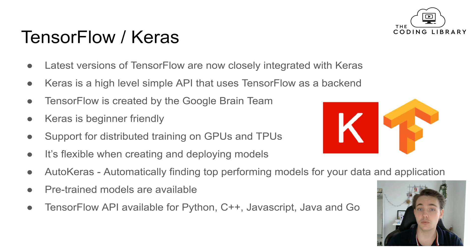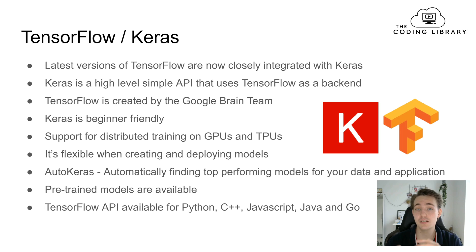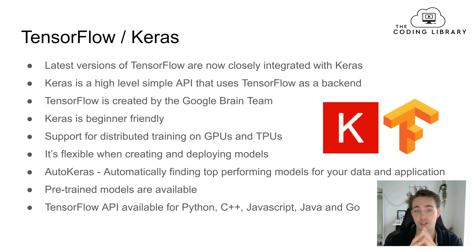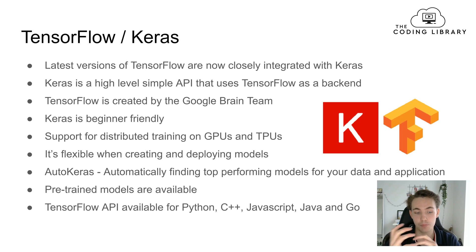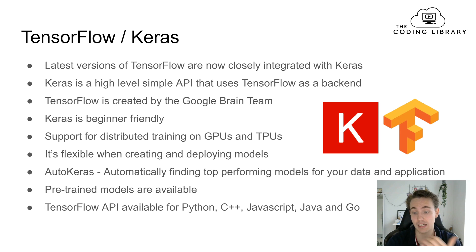With AutoKeras, you give it your data and it finds the model with the best performance for your application. Keras also has pre-trained models available, such as VGG or YOLO V4, all implemented and available in the pre-trained models library. The TensorFlow API is available for Python, C++, JavaScript, Java, and Go. In this tutorial, we're mainly focusing on using the TensorFlow and Keras API for Python.